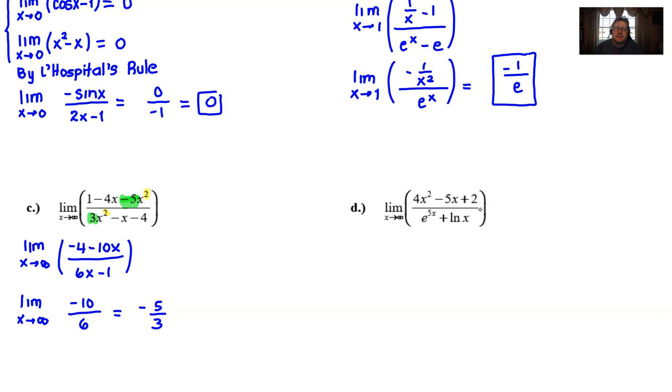That's exactly what we have going on in Part D. I will trust that you can see that we would get an indeterminate form of infinity over infinity. So we're going to use L'Hopital's rule. The derivative of the top is 8x - 5. The derivative of the bottom is 5e^(5x) + 1/x. If you try to plug infinity in for x, I think we're going to see the top is still approaching infinity. The bottom is also going to be approaching infinity rather quickly. We still have an indeterminate form of infinity over infinity.